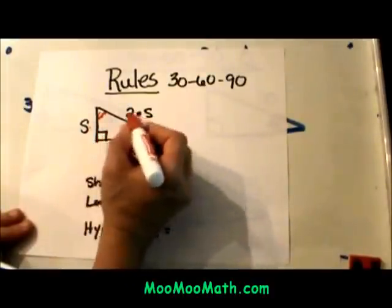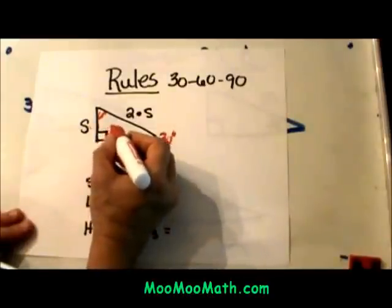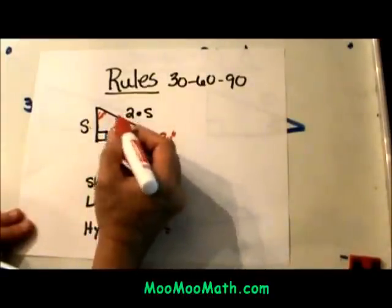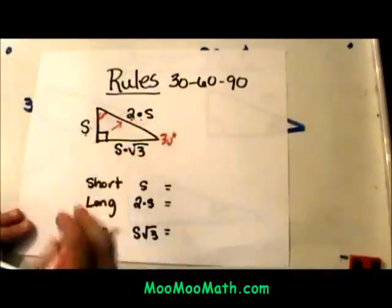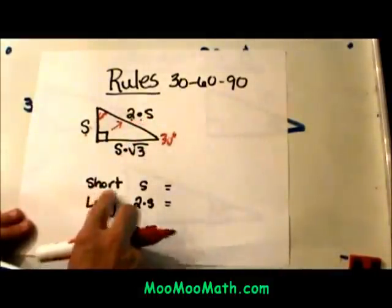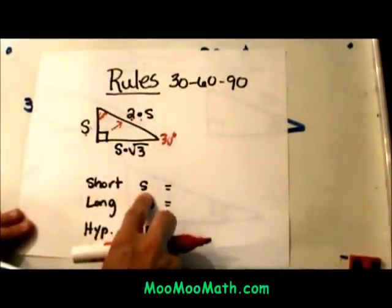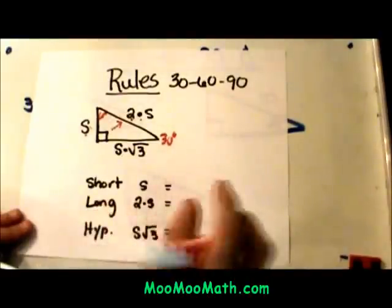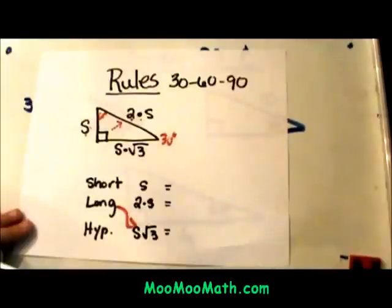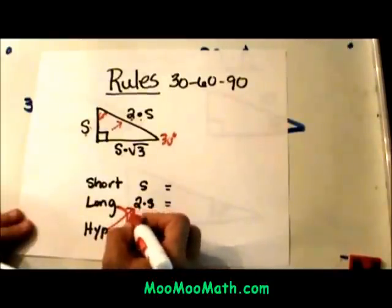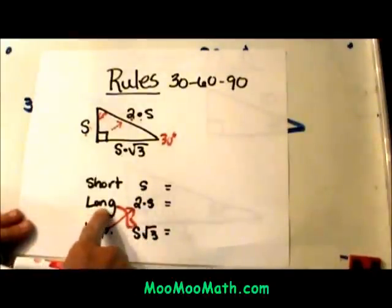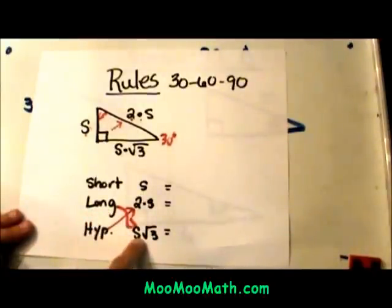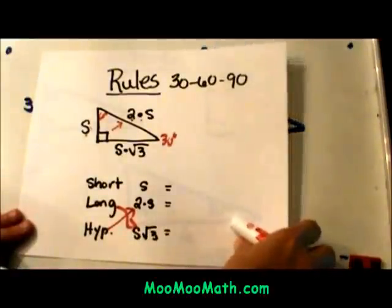Then our hypotenuse is always opposite the right angle. You take the short leg and multiply it by 2 or double it to find the hypotenuse. The short leg is our starting point S. The long leg is S times the square root of 3. The hypotenuse is S times 2. Be careful you don't read that wrong. The long leg is S square root of 3 and the hypotenuse is 2 times S.